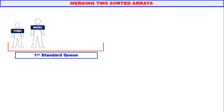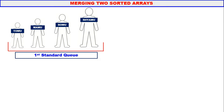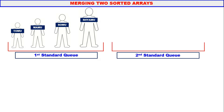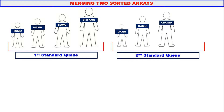The first standard queue has students Tomu, Mamu, Somu, and Shamu, all standing in ascending order of their heights. The second standard queue has students Damu, Ramu, Somu, and Bimu — all four students of second standard standing in the queue in ascending order of their heights.